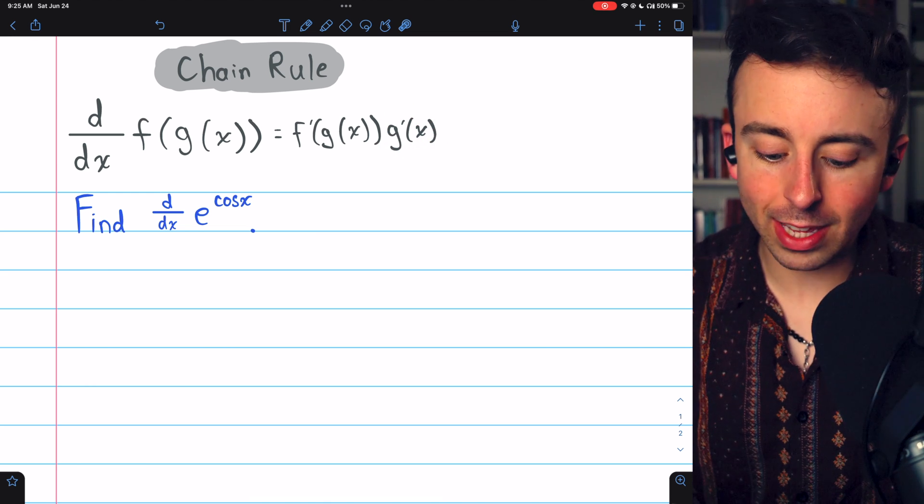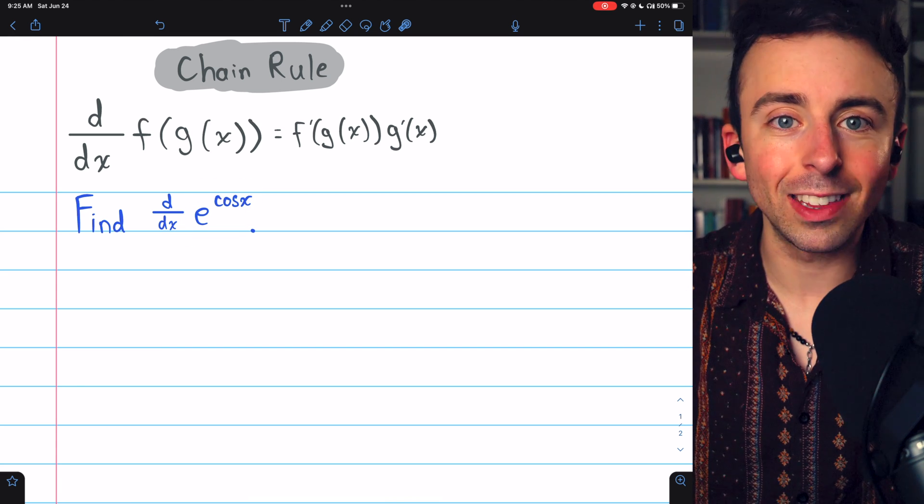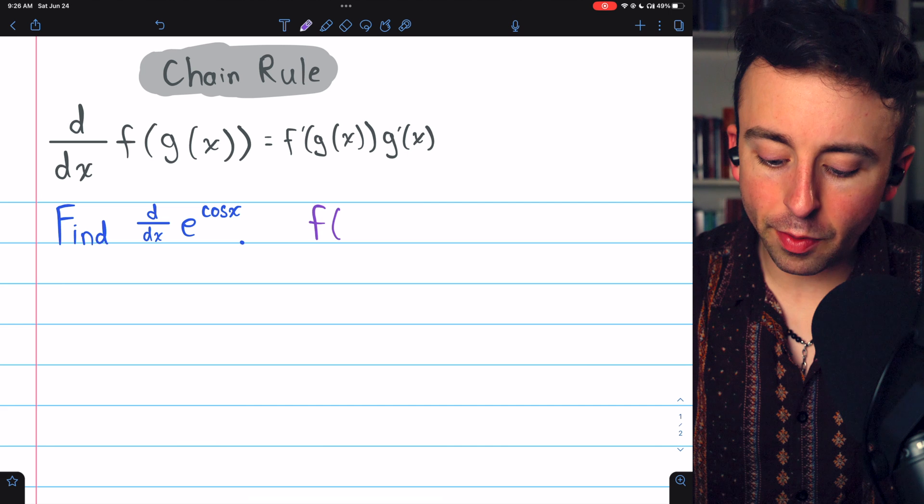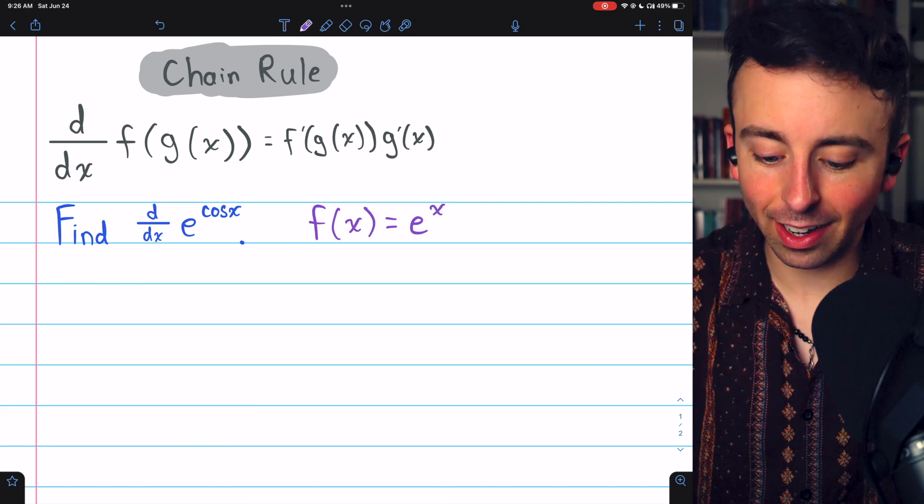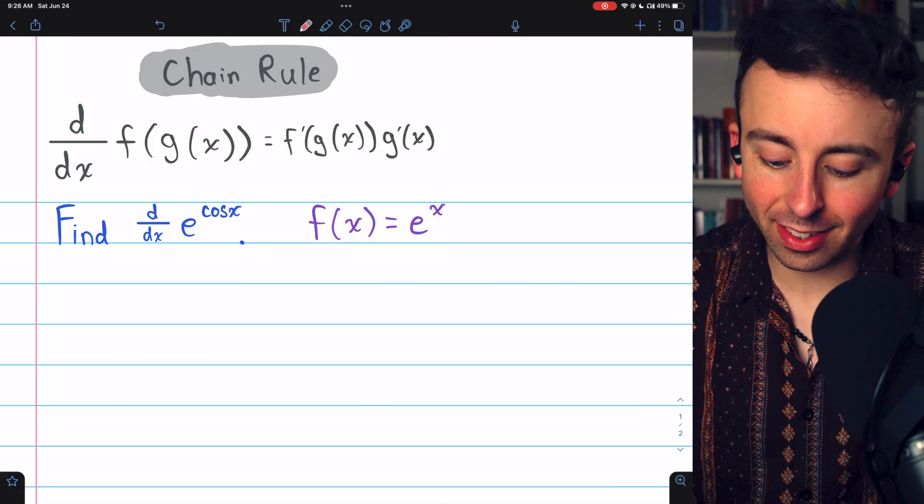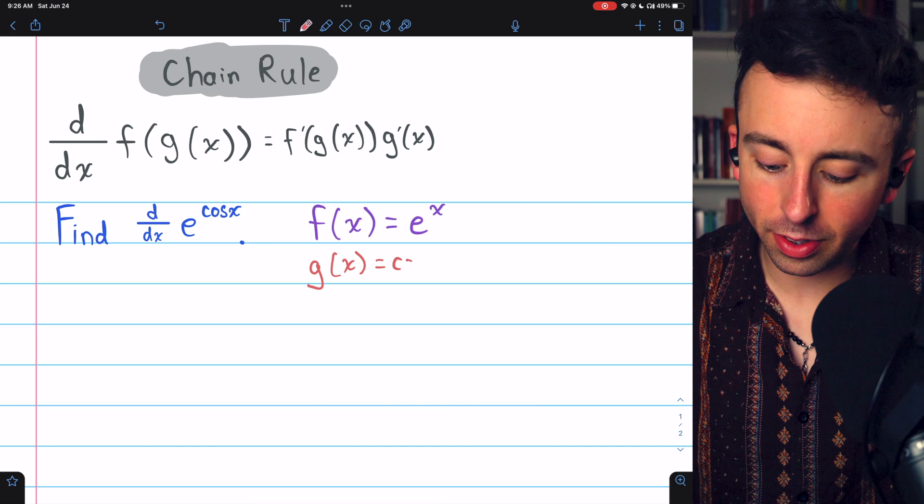So if we can accurately identify the outside and inside functions here, we'll be able to apply the chain rule to find the derivative. In this problem, f of x, the outside function, is e to a power, e to the x. That power, that inside function that we'll call g of x, is simply cosine x.